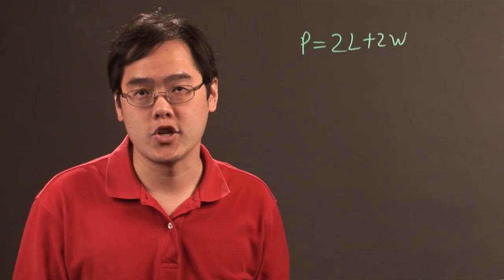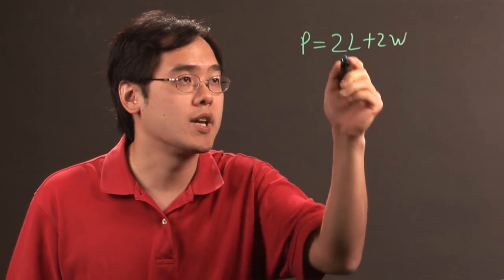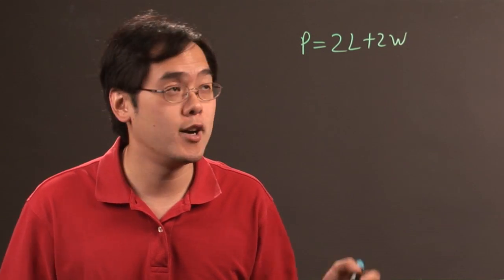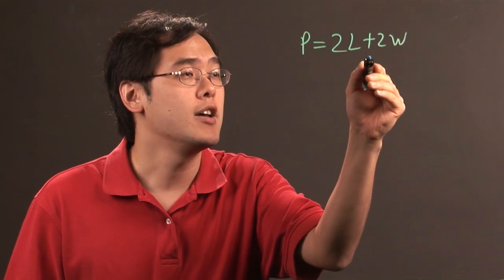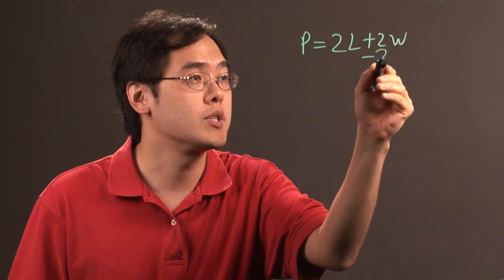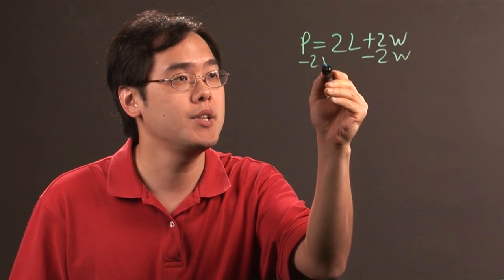Now a lot of it depends on what kind of information you're given, but if you wanted to solve for let's just say length, it's just like any other algebra equation that you want to get it by itself. So if you want to get l by itself, you want to go ahead and move the 2w term over. Since it's adding 2w, you want to subtract 2w on both sides.